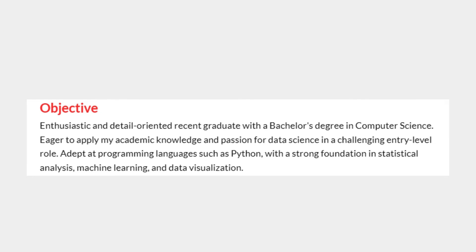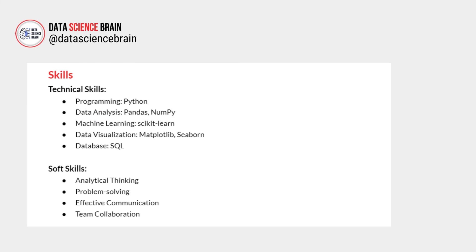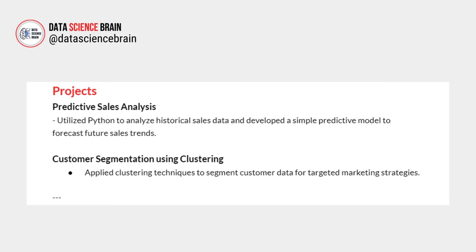Then comes your education — include all major qualifications such as high school, undergraduate, and postgraduate degrees. Next, list your technical skills that you are confident about. After that, include soft skills, making sure to incorporate the keywords mentioned earlier in this video.